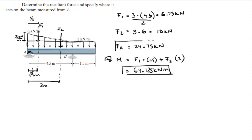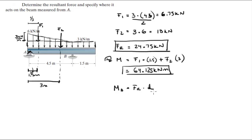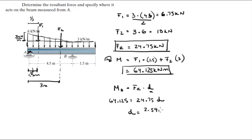This is the resultant force, and to find where it acts on the beam measured from A, you use: moment about A equals the resultant force times the distance D. The moment is 64.125, the resultant force is 24.75, and D is the variable we're trying to find — so D comes out to be 2.59 meters.